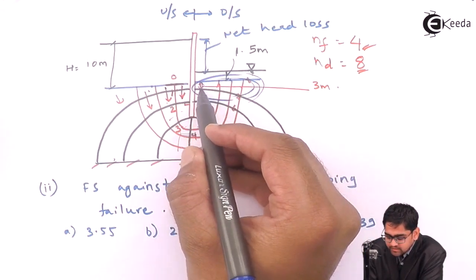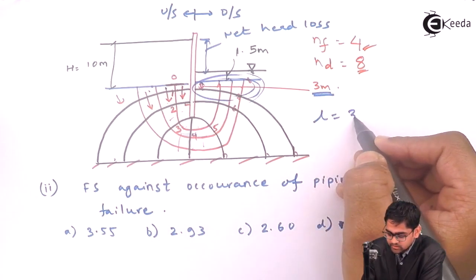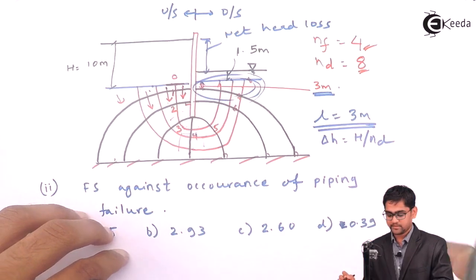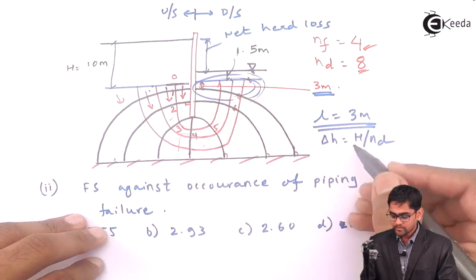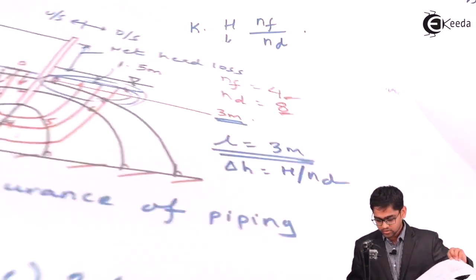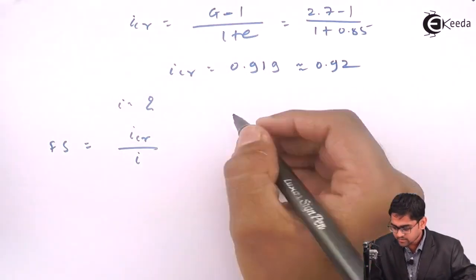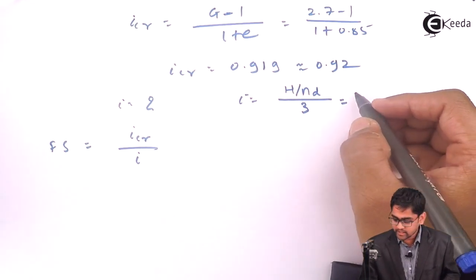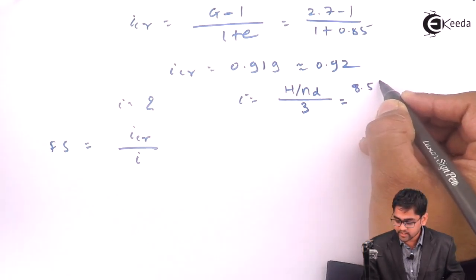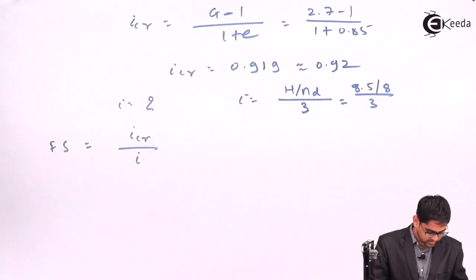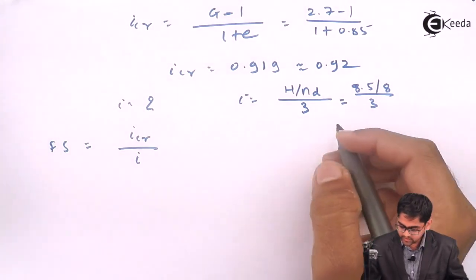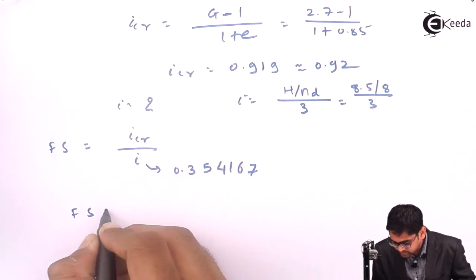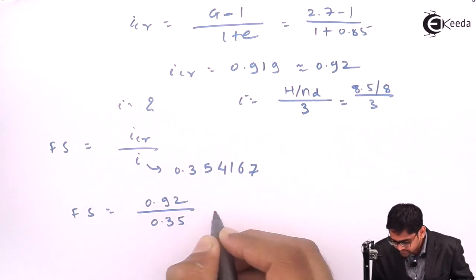If you concentrate in this zone, the length is given as 3 meter. Smartly the problem is formulated. The head loss delta h will be h divided by ND. Because this is the head loss which is uniform across all the potential drops. Therefore, i becomes total h divided by ND divided by L which is 3 meter length. Total head causing the flow to occur is 8.5 divided by 8 divided by 3. You will get i equal to 0.354167.